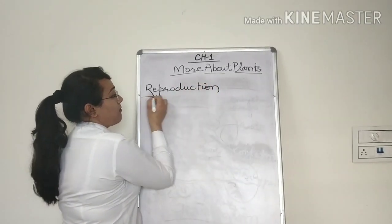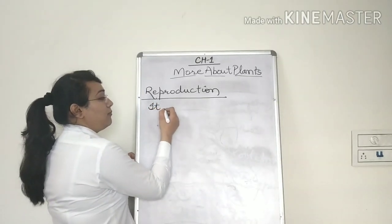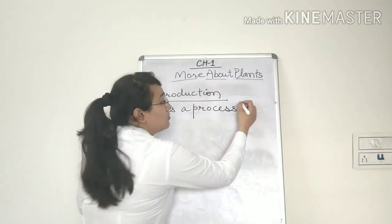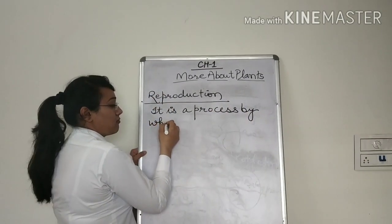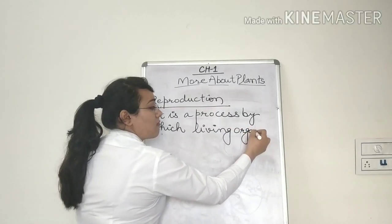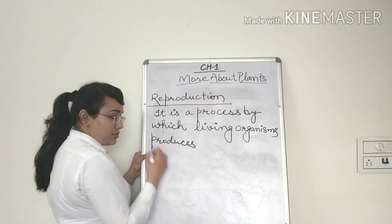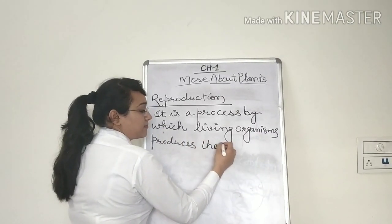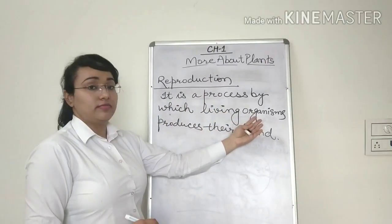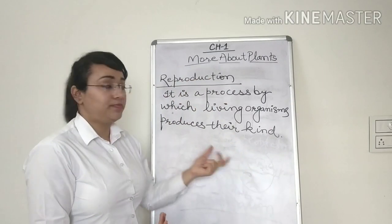Reproduction. As I explained to you, reproduction is a process. It is a process by which living organisms produce their own kind. Reproduction only in the living beings like in humans, likewise in plants, reproduction can happen.